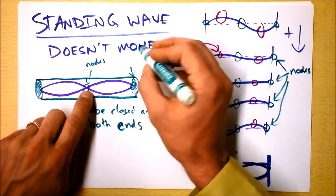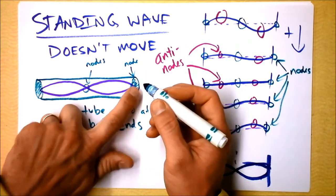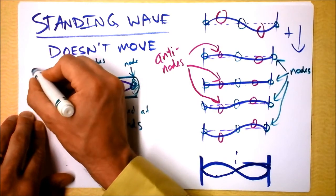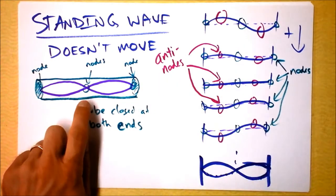How could the air molecules move at the end right here? And here's another node. That's a node, that's a node, that's a node. But in the middle...